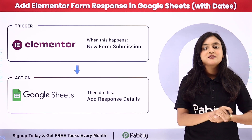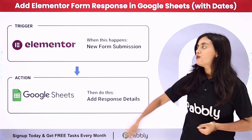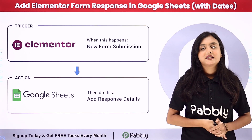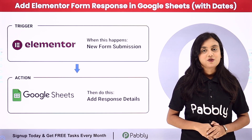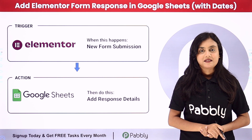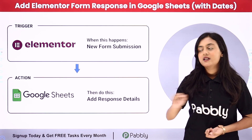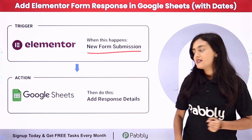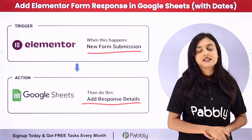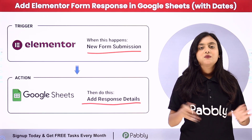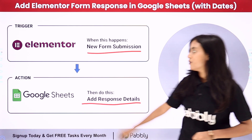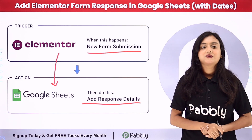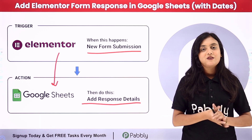Hello everyone, welcome back to Pabbly. In this video we are going to learn how to add Elementor form responses in Google Sheets with dates. I am an owner of a business and I collect the data of my leads with the help of form submission. I have created the form with the help of Elementor. My objective is that as soon as a new form submission is done by any of my customers, automatically I want to create the record of the response in my Google Sheets with the date of the submission. For that, we are going to create an automation between Elementor and Google Sheets with the help of Pabbly Connect. Let me take you to my screen.